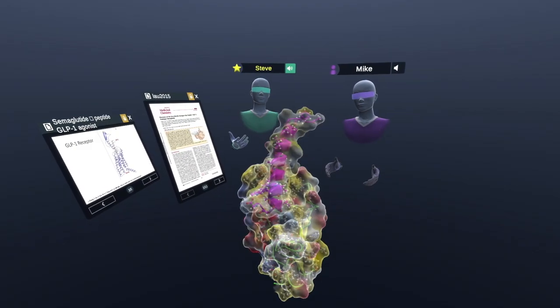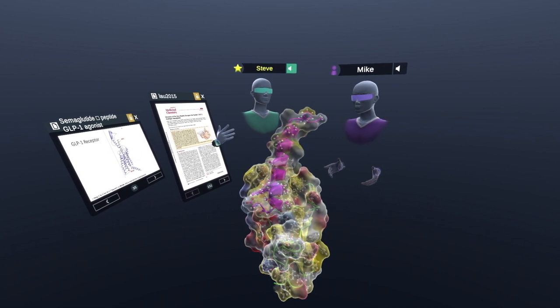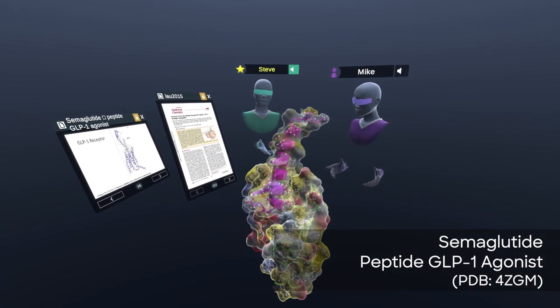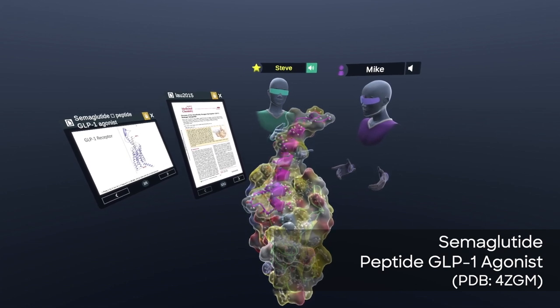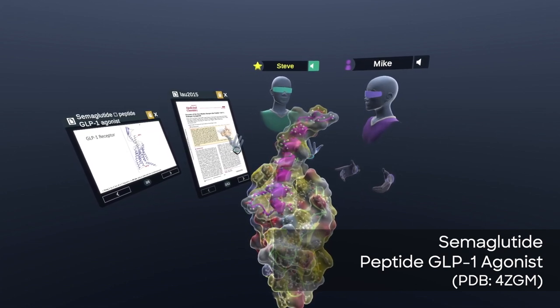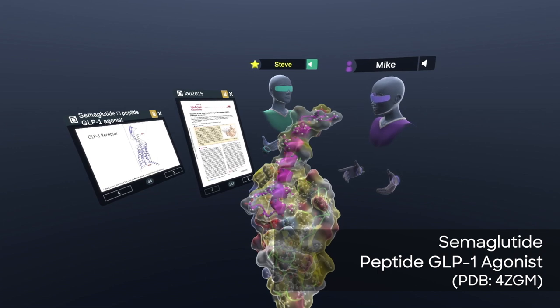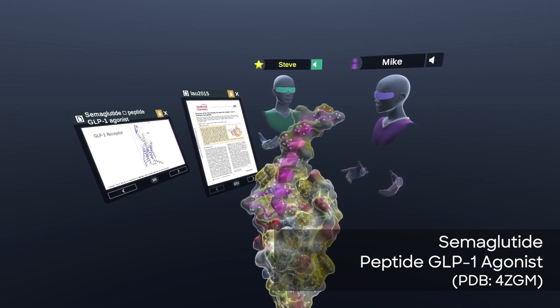Hi, everyone. Welcome to this month's Nanome of the Month. We're going to be exploring the semaglutide molecule made by Novo Nordisk. And what's really important here is that this is actually used to help treat people with diabetes. And traditionally, they would need to actually inject themselves with this.